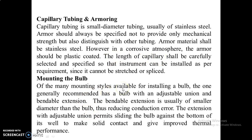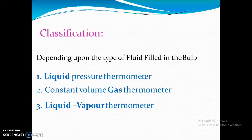Many mounting styles are available for installing the bulb. The mounting mechanism uses an adjustable union and a bendable extension. The bendable extension is usually smaller in diameter than the bulb, reducing conduction error. The extension with adjustable union permits sliding the bulb against the bottom of its well to make slight contact. Depending upon the type of fluid filled in the bulb, there are three types: liquid pressure, constant volume gas thermometer, and liquid vapor thermometer.